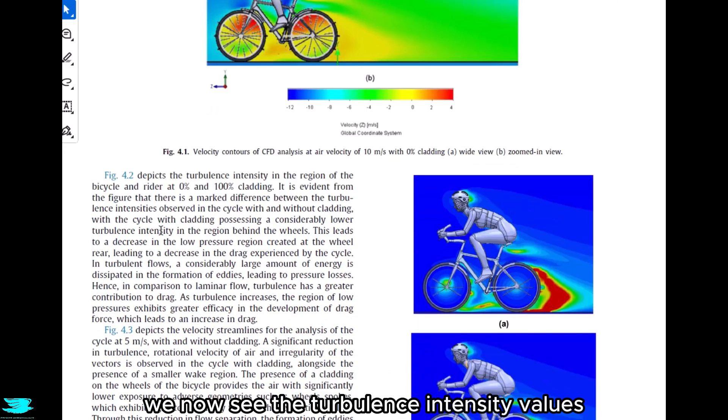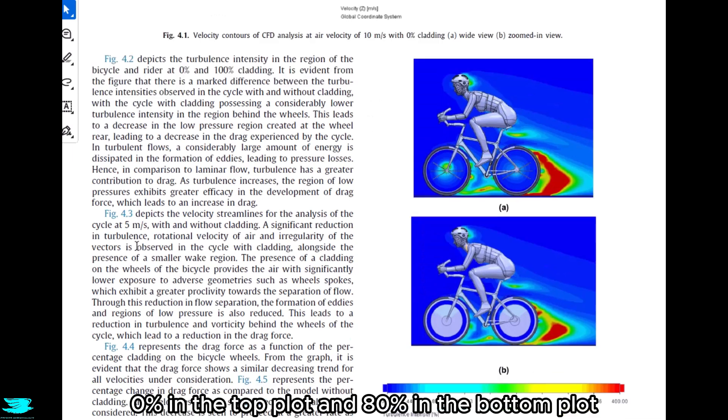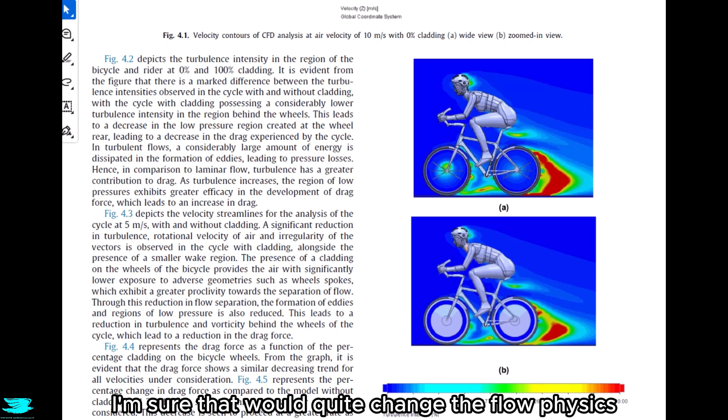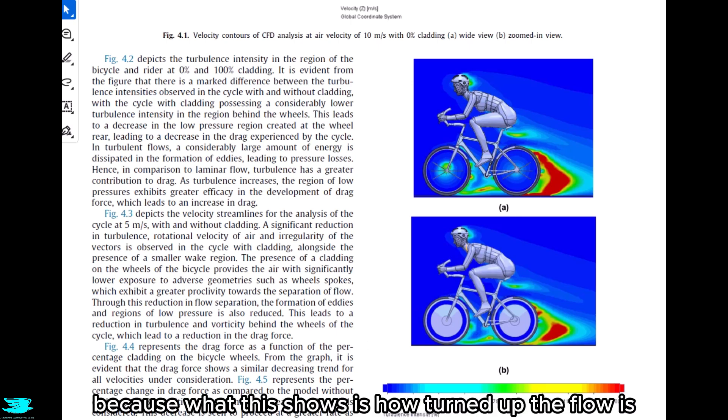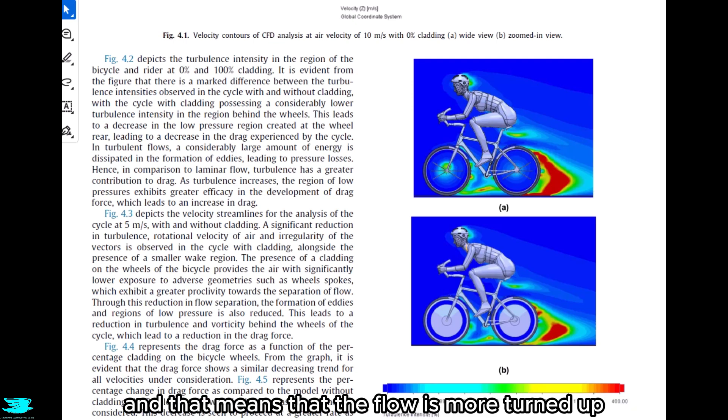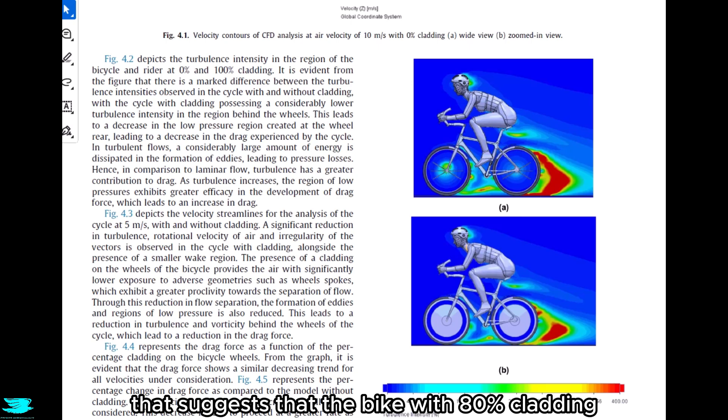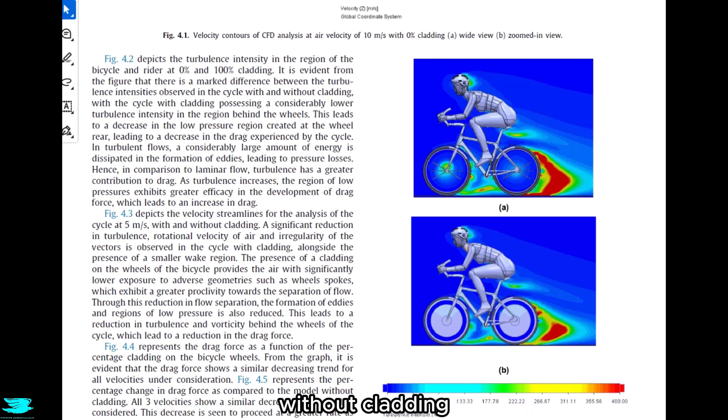In figure 4.2, we now see the turbulence intensity values with different amounts of cladding, 0% in the top plot, and 80% in the bottom plot. This is important to note, so the 80% is in the middle section, and the outer part of the rims are not covered. I'm sure that would quite change the flow physics, but maybe in a later date we'll cover that. Anyway, this is very interesting because what this shows is how churned up the flow is. The more red it is, the more turbulence there is, and that means that the flow is more churned up. With no cladding, so the top plot, there is definitely more turbulence behind the rear wheel.